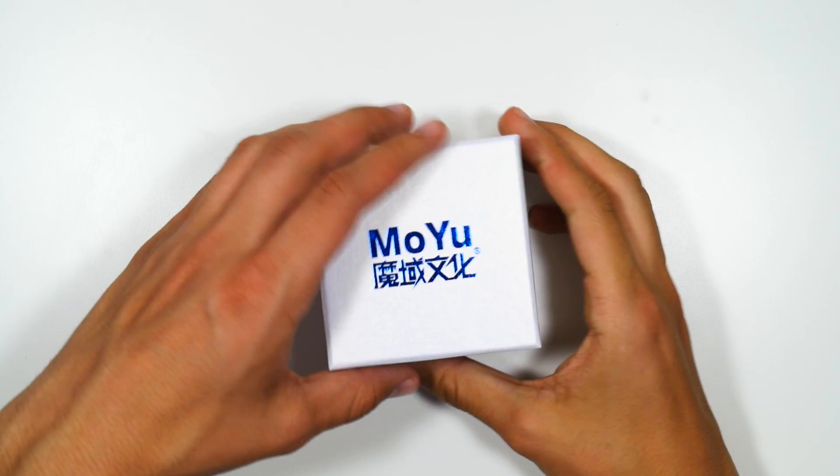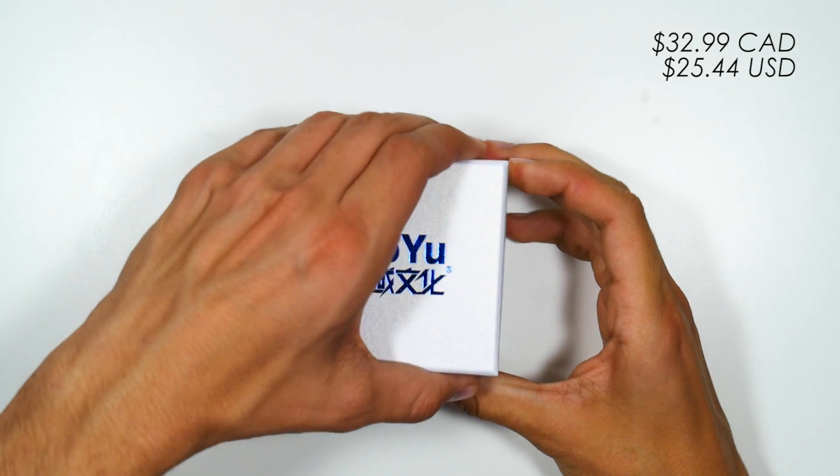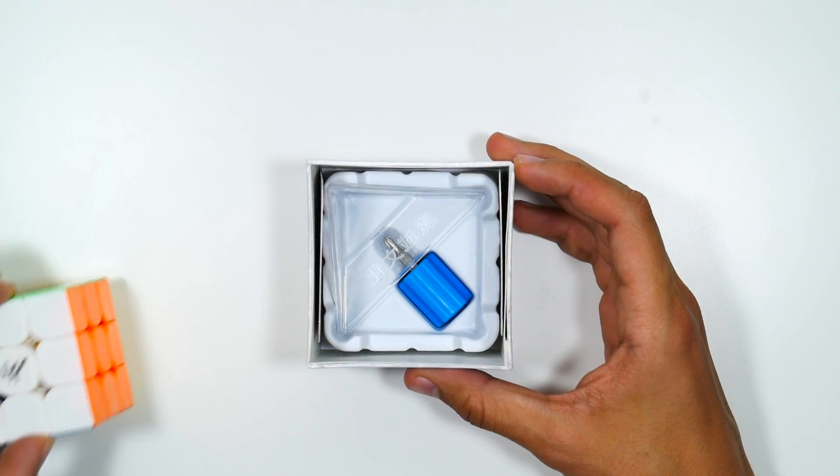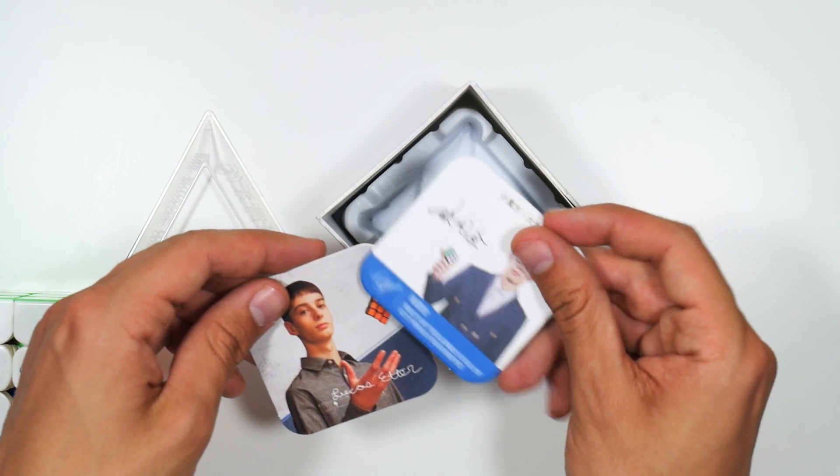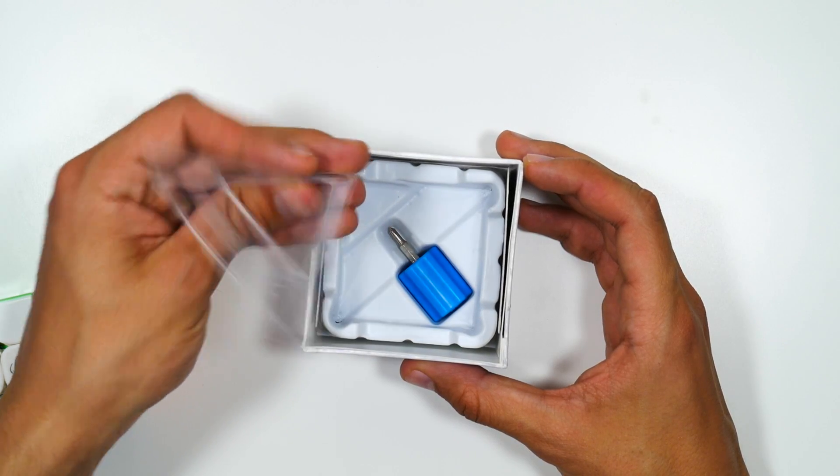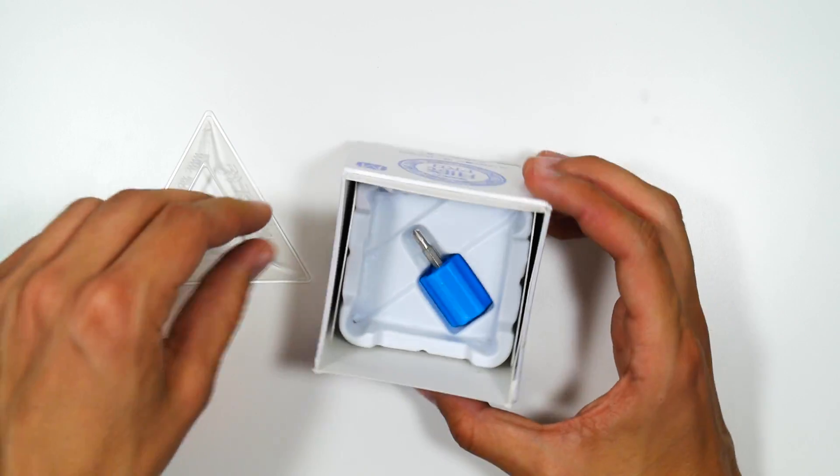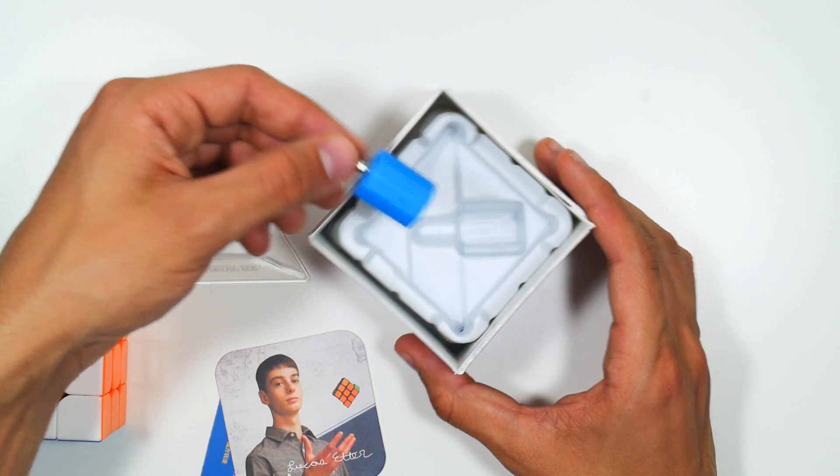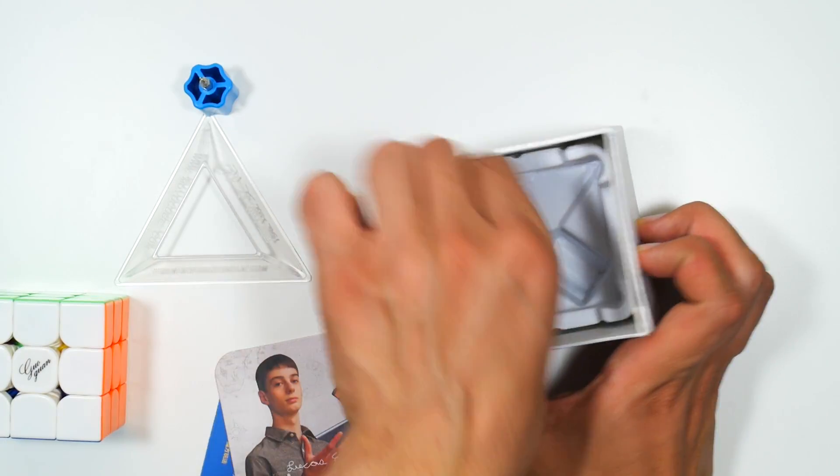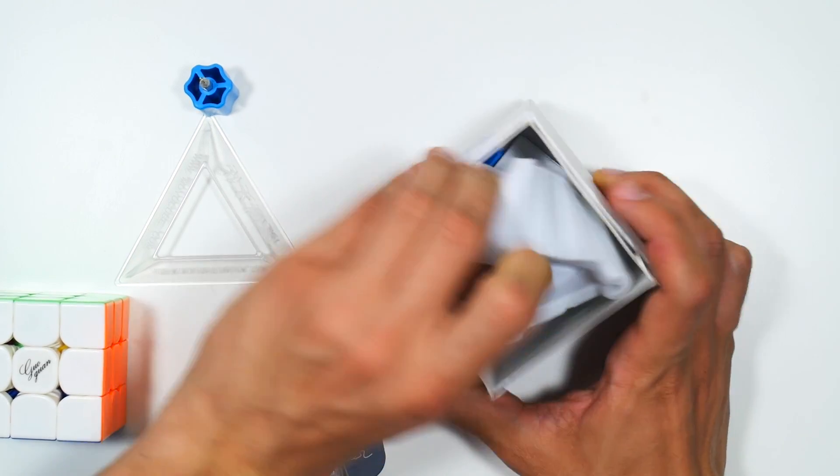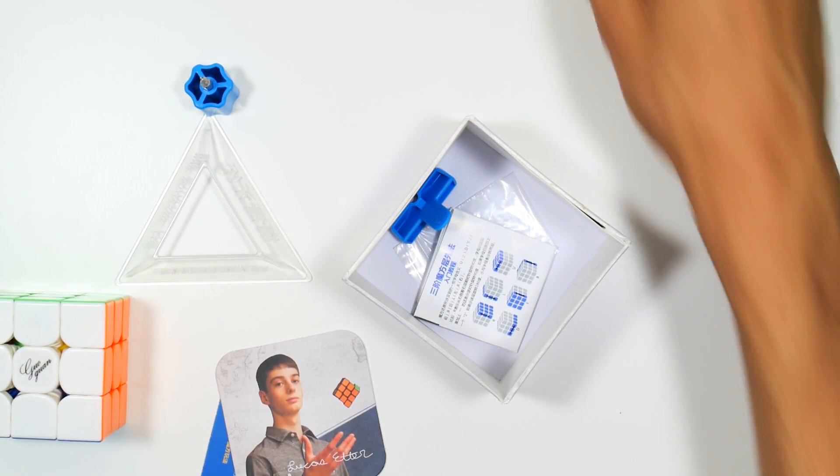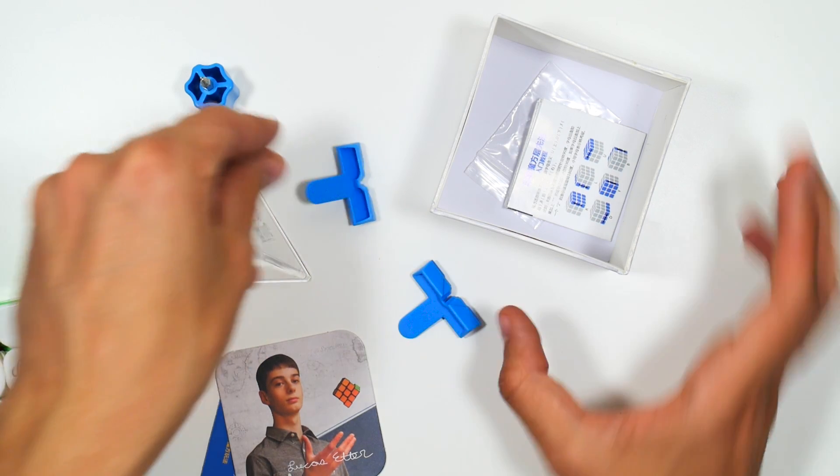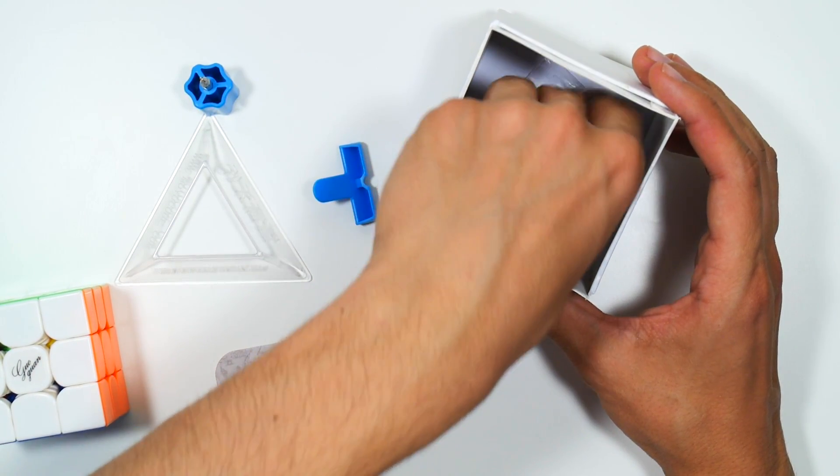At around $33 Canadian or $25 US dollars, this cube comes with a few accessories inside. You have Team MoYu cards, a cube stand, a screwdriver to tension it, and it's a pretty nice size in a cool blue. Hidden underneath, you actually have your tensioning tools and some magnets as well as a manual.